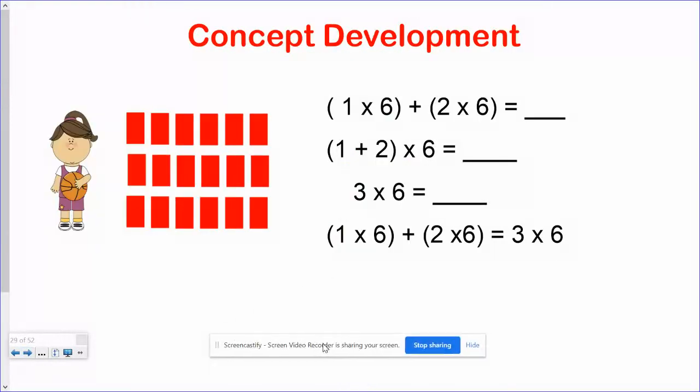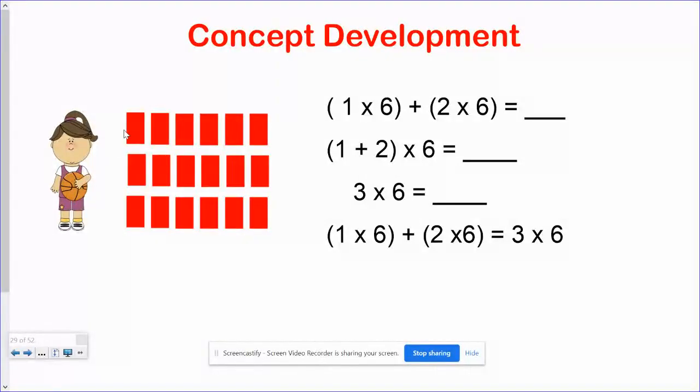Take a look at this one. Again, here is our array. One group of six, plus two groups of six. What does that equal? We'll count them up.